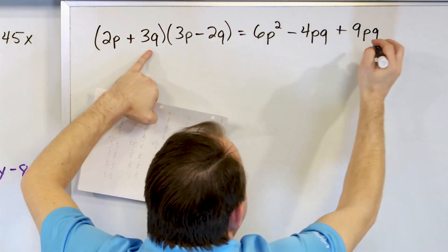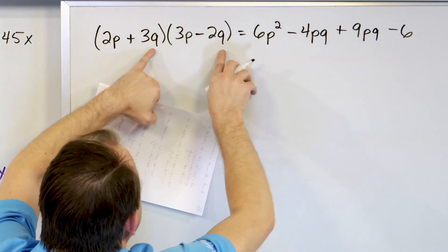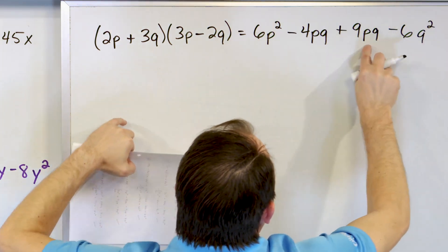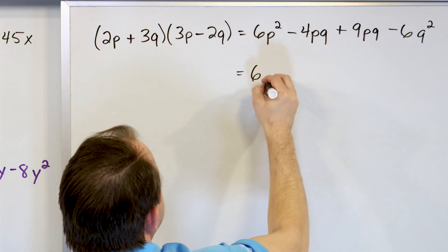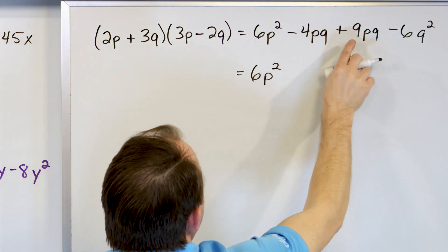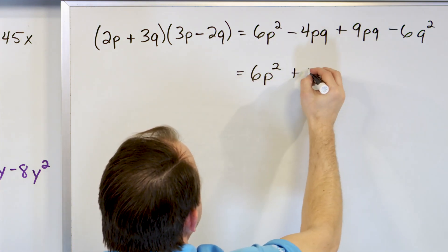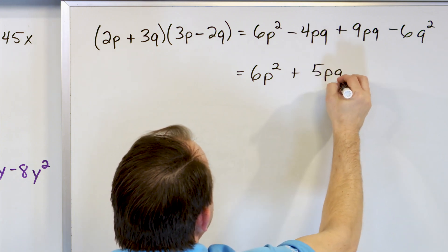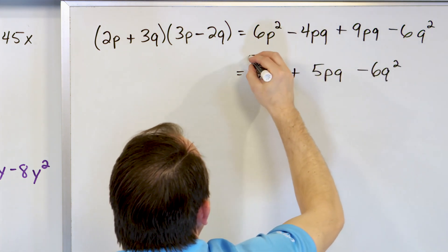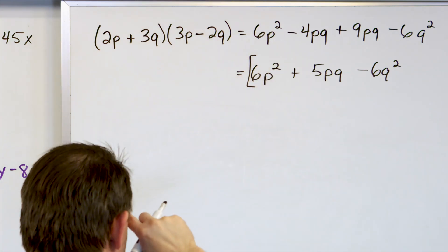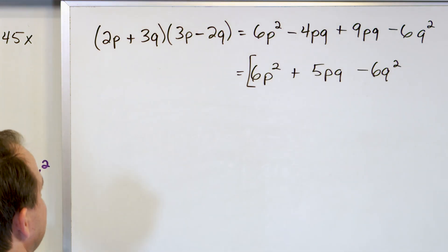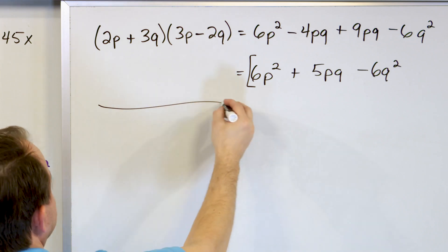The last terms: negative 2 times 3 is negative 6, and q times q is q squared, giving negative 6q squared. Combining: negative 4 plus 9 is 5pq. So the final answer is 6p squared plus 5pq minus 6q squared.